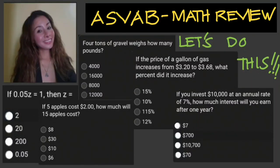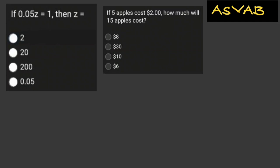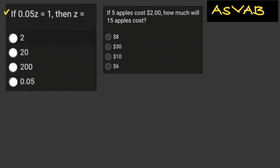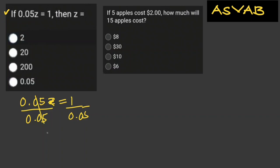Let's try solving some practice problems. If 0.05z = 1, what is z? To solve for z, we divide both sides by the coefficient of z, which is 0.05. This cancels out, so z equals 1 over 0.05, which equals 20.